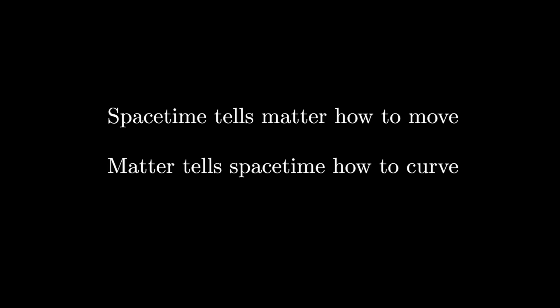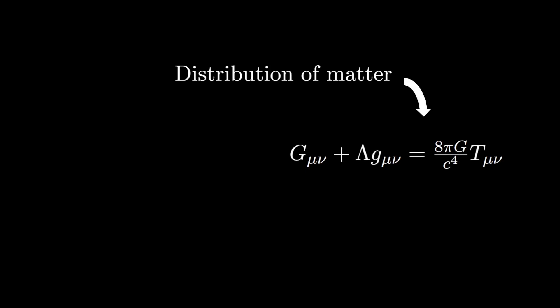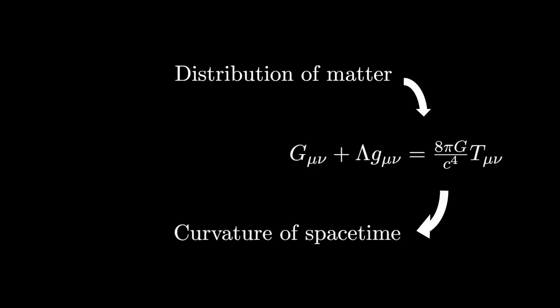In this video, I'm going to try to unpack at least a little bit the mathematics that hide behind this, and hopefully build some visual intuition for what's going on. Let's start with the distribution of matter and energy in space. This equation is then going to tell us how this distribution of matter is going to curve space-time. This is a set of differential equations called the Einstein field equations. The right-hand side describes the distribution of matter and energy, and the left-hand side the curvature of space-time.